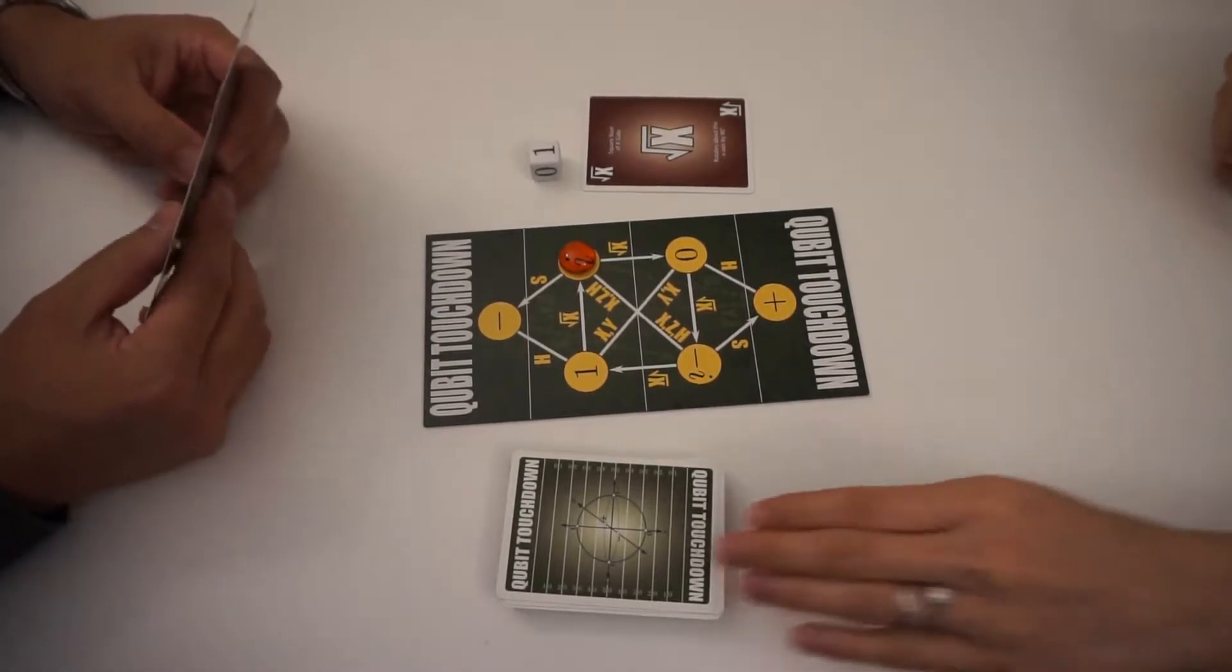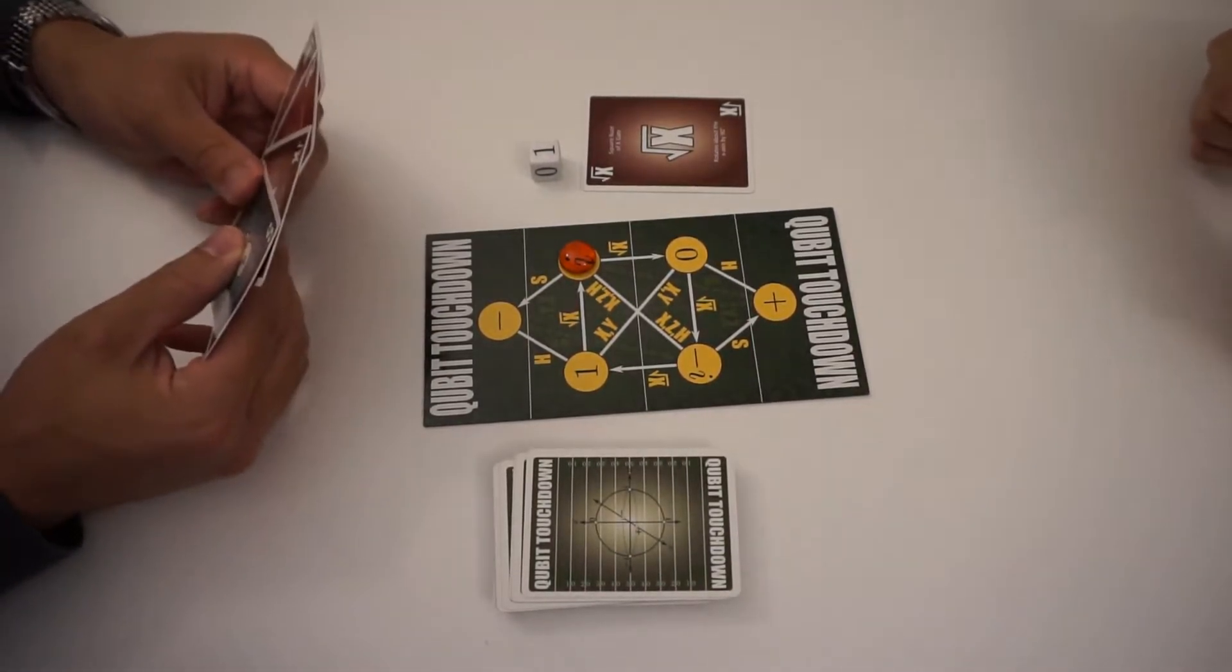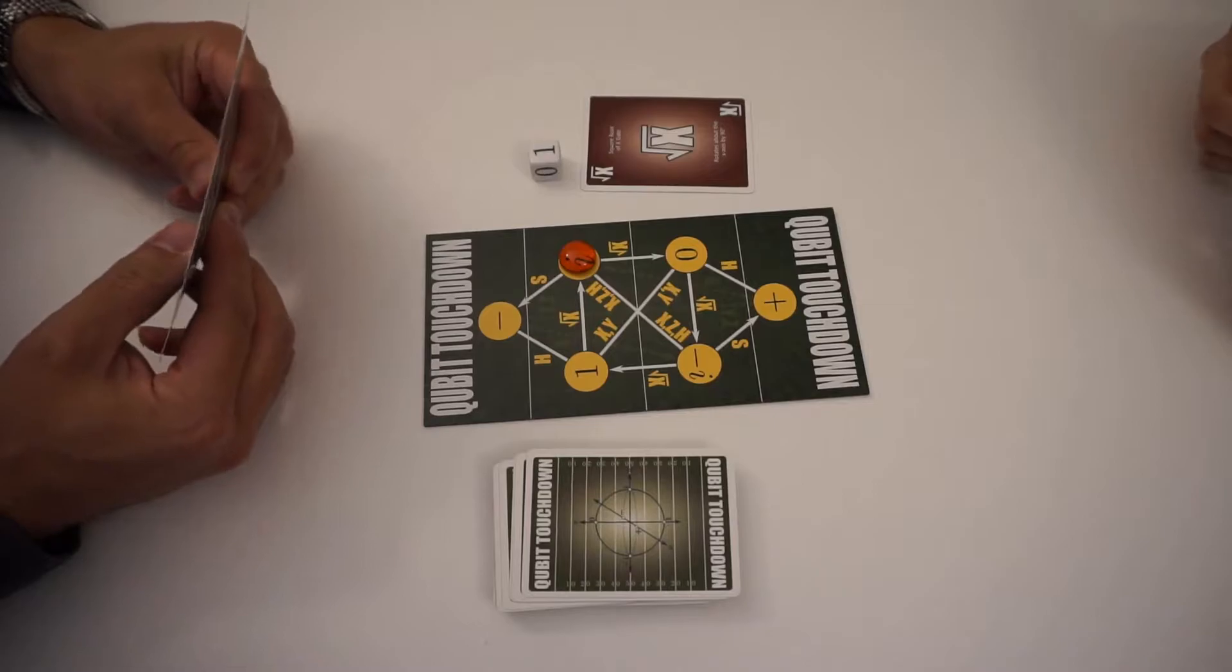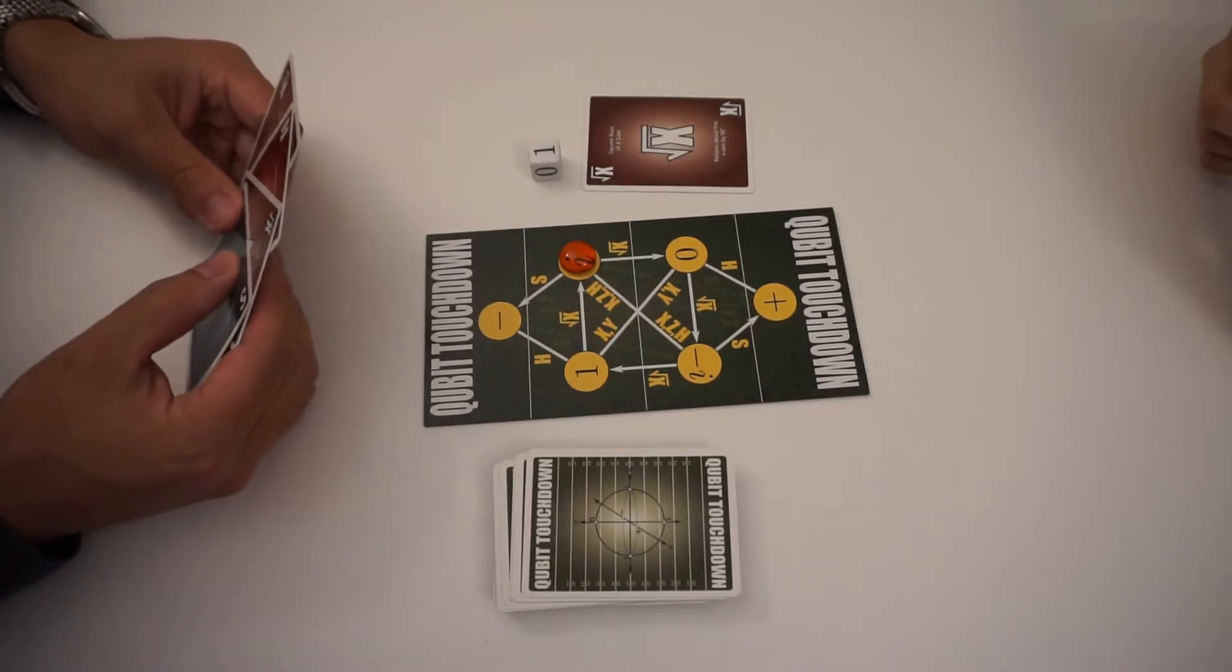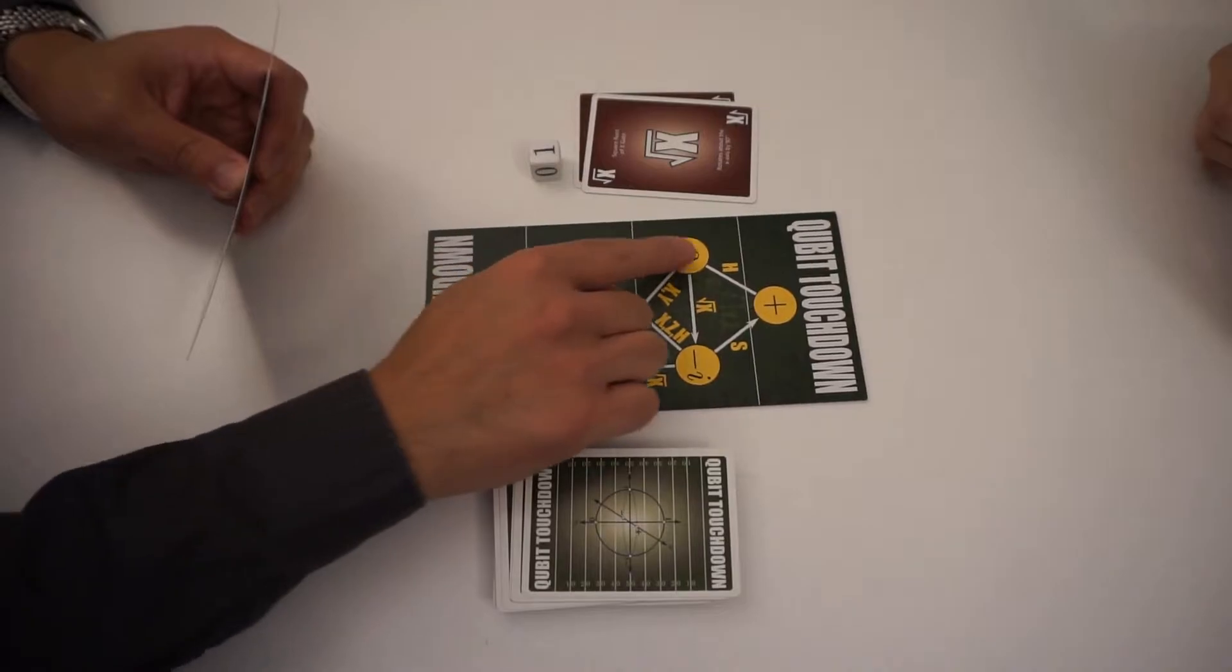And then you grab another card. So the idea is that you always have four cards in your hand until the very end. Then you just play whatever you have left. Square root of X.